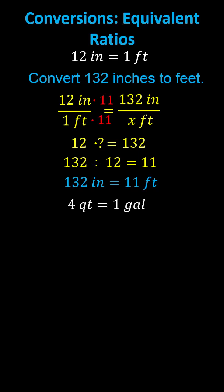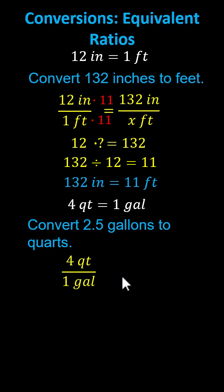For the second example, let's use the conversion four quarts equals one gallon, and convert 2.5 gallons to quarts. We'll begin with the ratio of four quarts to one gallon, which must equal the ratio of an unknown number of quarts to 2.5 gallons. We'll use the ratio of x quarts to 2.5 gallons.